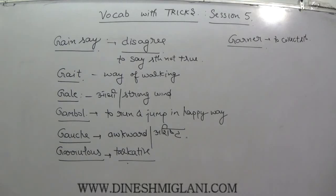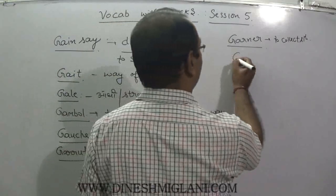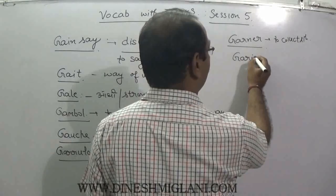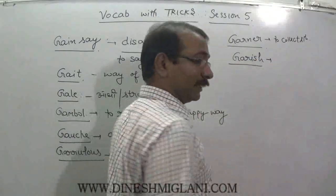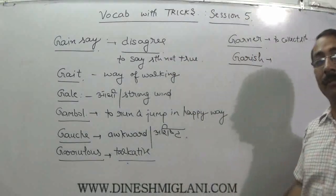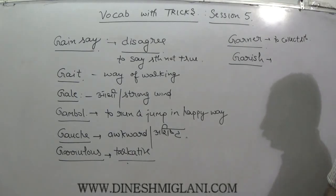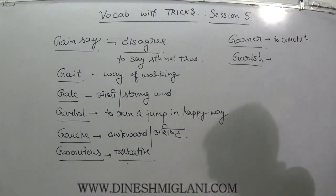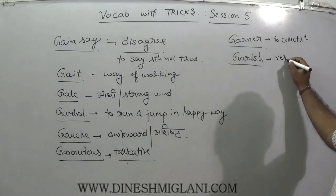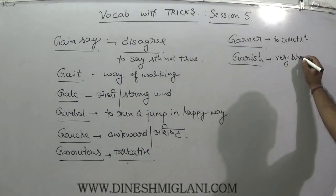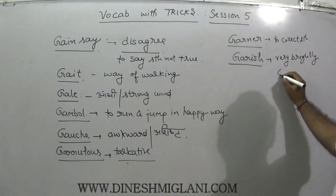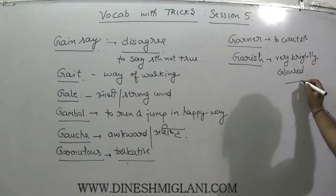Next word is garish, G-A-R-I-S-H. Garish reminds us of Kris — and how does Kris dress? Very brightly. So garish means very brightly colored. If you've seen the movie Kris 2 or Kris 3, Kris's dress is very bright. So garish means something very brightly colored.